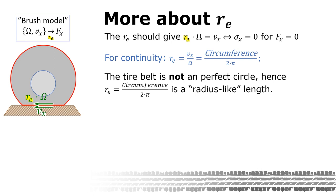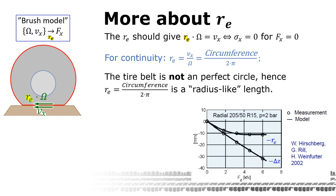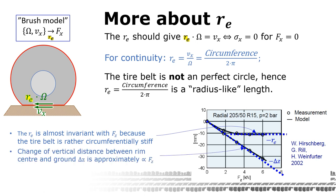So re is not a directly measurable radius, but still we can see it as a radius-like length. Here are some measurements. They indicate that re remains approximately the same for different fz. We also find that the change of vertical distance between ground and rim center, delta z, is approximately proportional to fz.